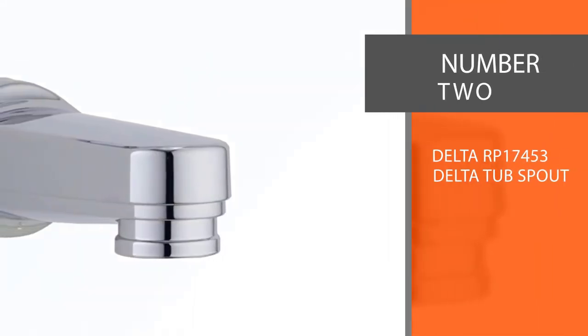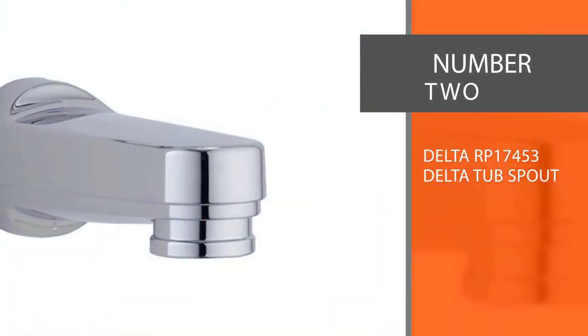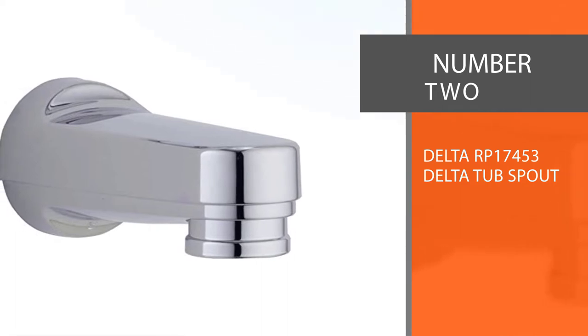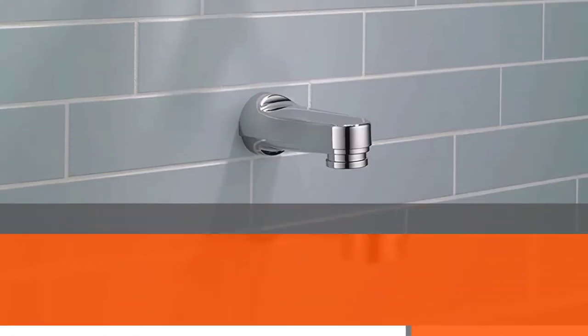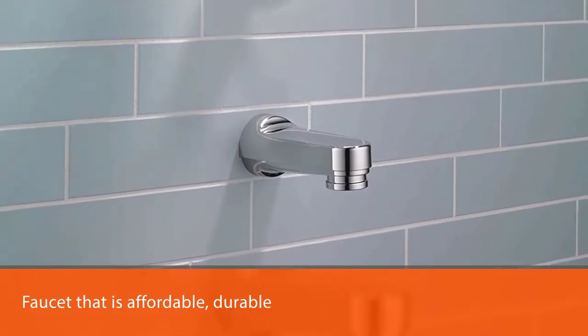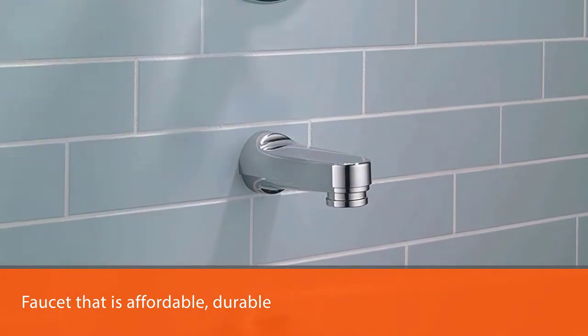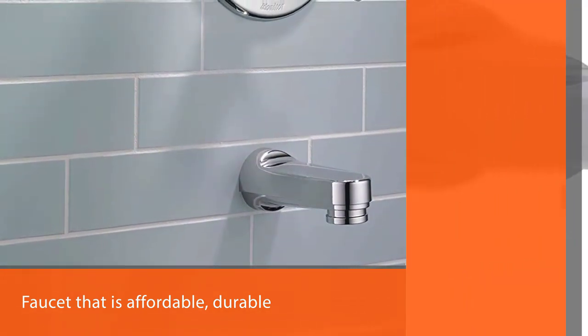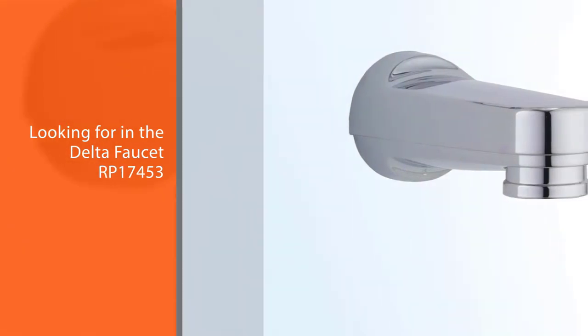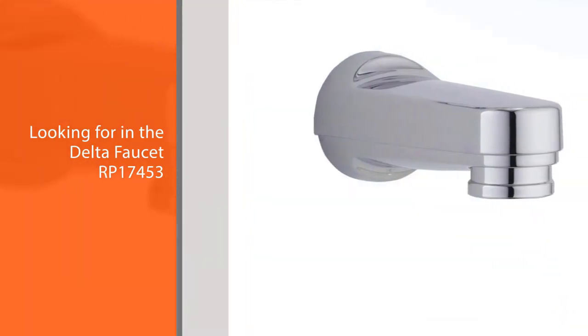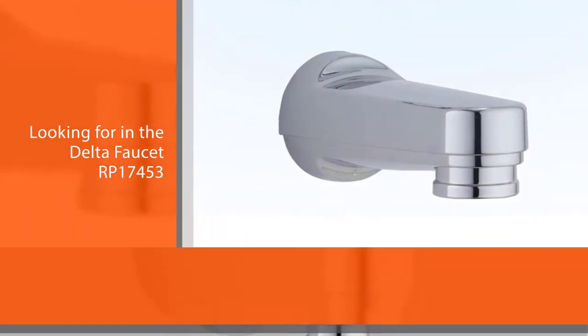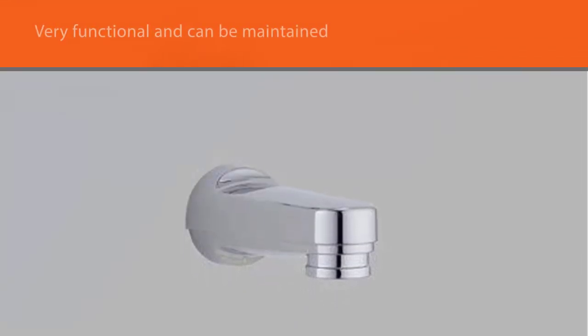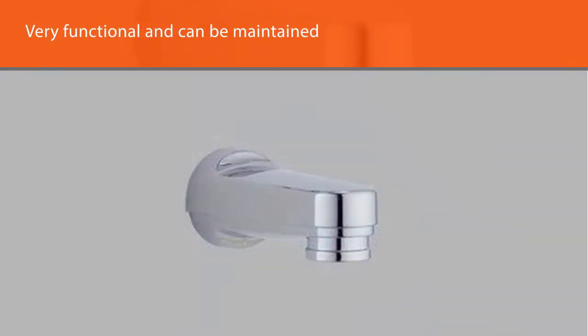Number two: Delta RP 17453 Delta Tub Spout. If you're interested in buying a faucet that is affordable, durable, and easy to use, then you've found what you've been looking for in the Delta Faucet RP17453. It is very functional and can be maintained easily. One of the greatest things about this faucet is that the parts are genuine and it does not consume much water.